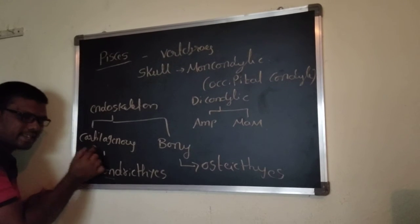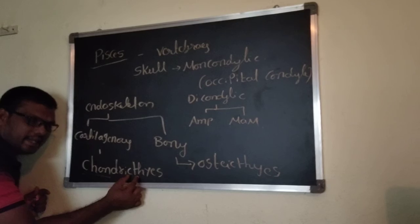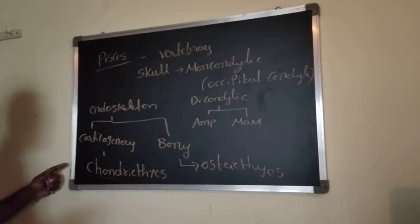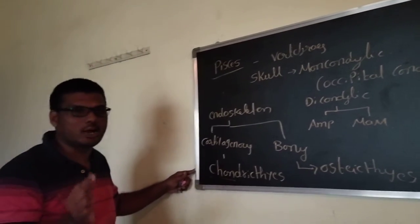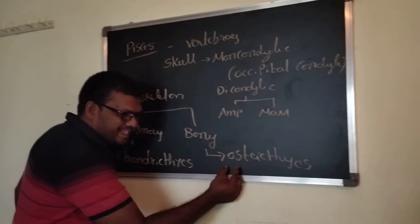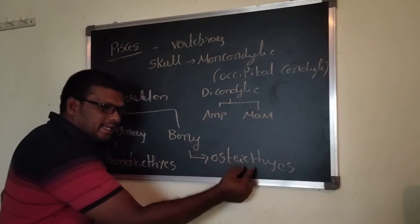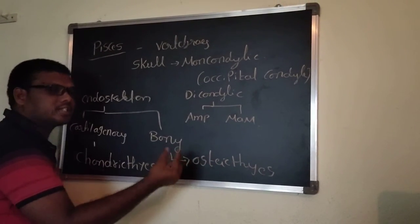Chondrichthyes: 'Chondry' indicates cartilage, 'ichthy' indicates fishes. The study of fishes is known as ichthyology. Osteichthyes: 'Oste' indicates bony, 'ichthy' indicates fishes—bony fishes.